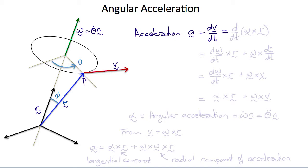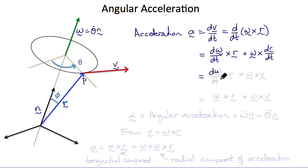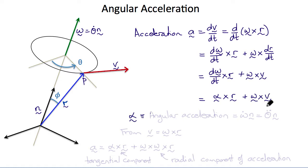The acceleration a is dv/dt, which from our previous slide is d/dt of omega cross r. Applying the product rule gives dω/dt cross r plus omega cross dr/dt. And dω/dt is alpha, the angular acceleration vector, so we get that a equals alpha cross r plus omega cross v. The angular acceleration alpha also acts along the axis of n, and its magnitude is ω-dot or θ double dot.